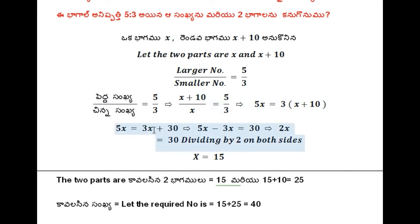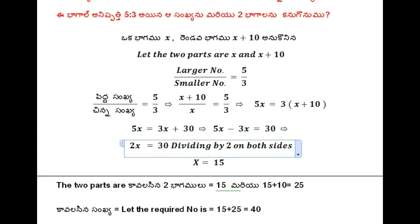Separating variables and constants. Subject always lies on the left side of the equality. Using the process of transposition — transposition of plus 3x becomes minus 3x. So 5x minus 3x is equal to 30, which gives 2x is equal to 30. Here dividing by 2 on both sides — x is equal to 15.